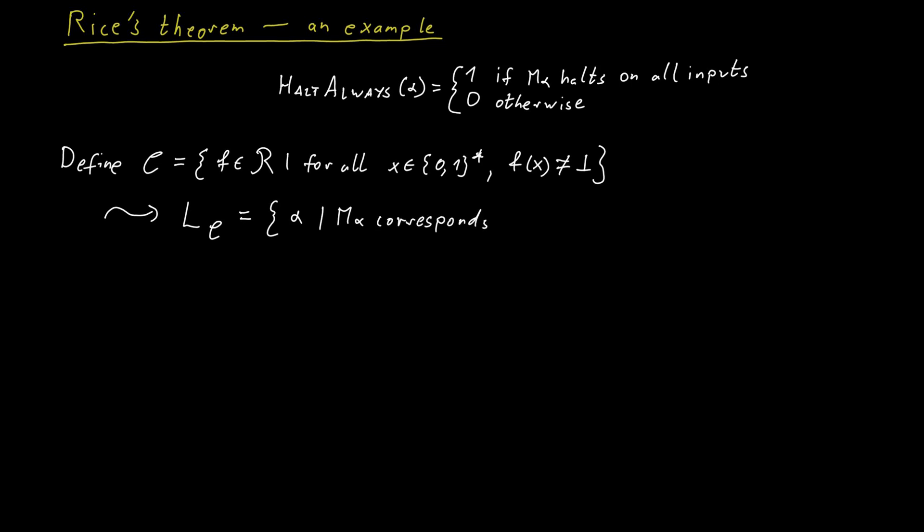Meaning a Turing machine should terminate on every input, meaning the machine should produce some output for every input. Now the language LC is exactly HALT ALWAYS.